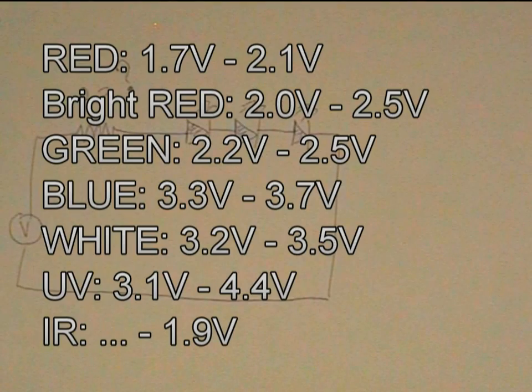Typically, red LEDs operate from 1.7 to 2.1 volts. Bright red LEDs operate from 2 to 2.5 volts. Green LEDs from 2.2 to 2.5 volts. Blue LEDs can go up to 3.7 volts. White LEDs from 3.2 to 3.5 volts. UV LEDs from 3.1 to 4.4 volts. And infrared LEDs have a maximum of 1.9 volts.